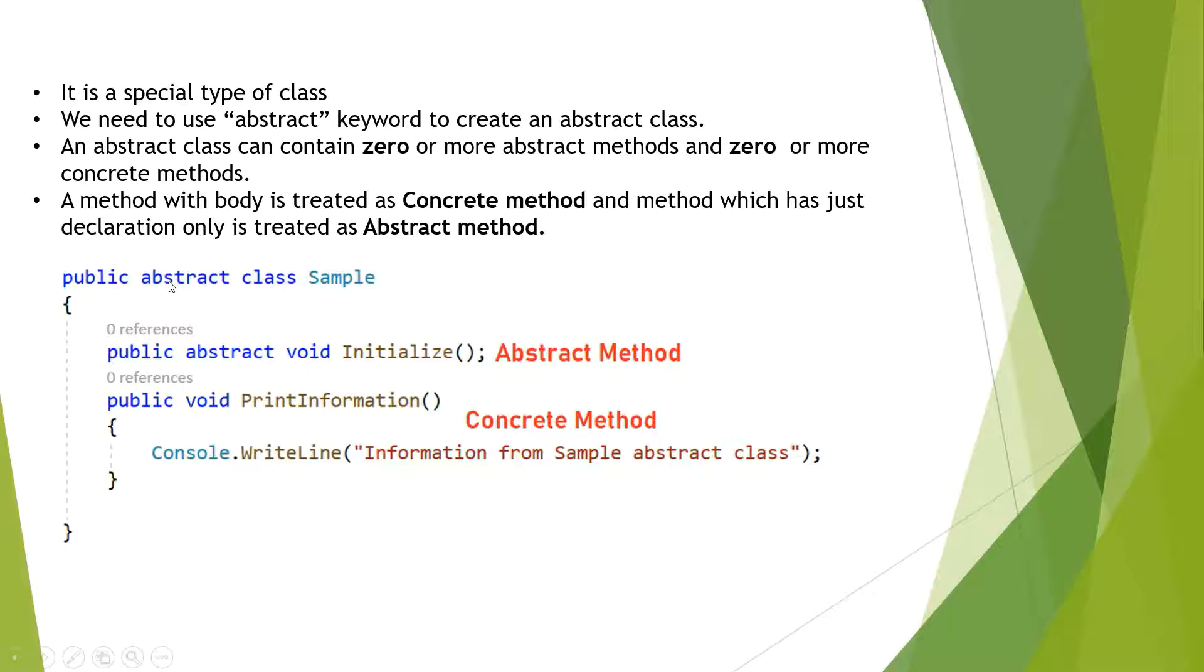An abstract class can have zero or more abstract methods and zero or more concrete methods. In the example, if you see, the first method has the abstract keyword and it does not have a method body, so this is an abstract method. The second method does have the body inside the curly braces, so this method is a concrete method.